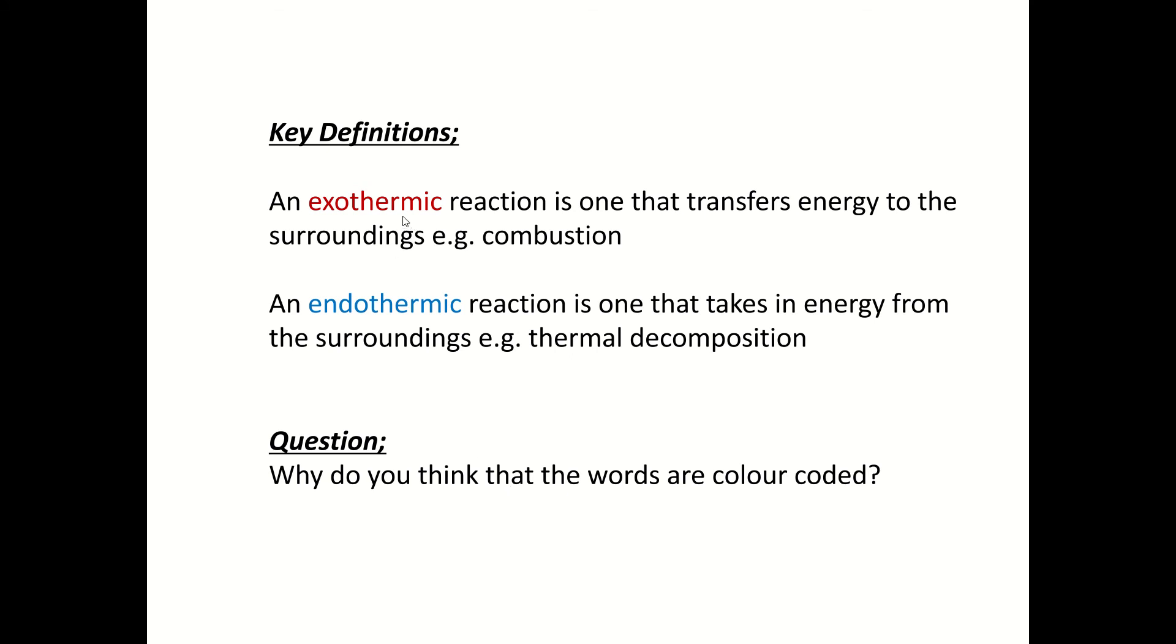Now exothermic is red. Because it's going to transfer energy to the surroundings. That means that reaction is going to get hotter. It's going to heat up the surroundings. So the temperature is going to get hotter. Whereas the endothermic reaction is in blue. Because if it's taking in energy from the surroundings, that reaction is going to get colder. Now to remember which reaction, you kind of have to break down the word. We've got exo and endo. But then the rest of the word in both cases is thermic. Anything to do with therm, like thermometer, thermal, is to do with a change of heat energy, a change of temperature.